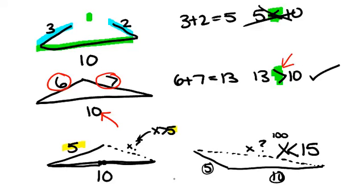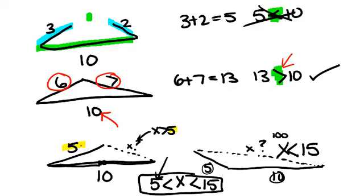So what we've learned is that x has to be greater than 5 and less than 15. So if you know two sides of a triangle, you can figure out the possible lengths for the third side by subtracting the two original numbers, 5 and 10, to get the lower limit, and adding the two original numbers, 5 and 10, to get the upper limit.